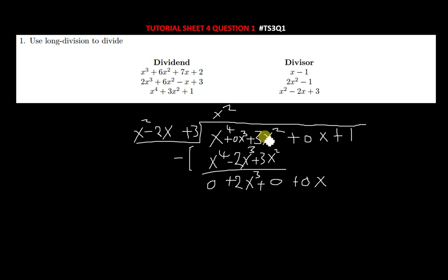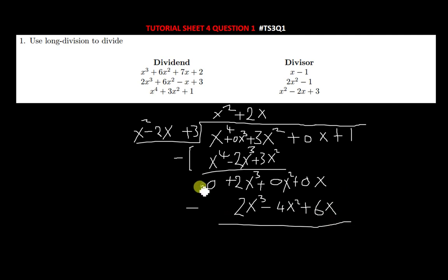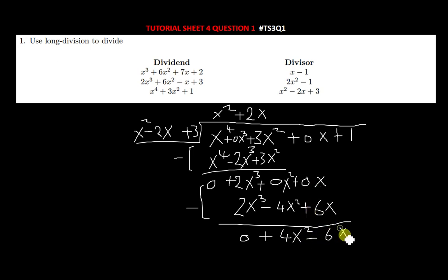Now divide x² into 2x³ to get positive 2x. Multiply: 2x times x² gives 2x³; 2x times −2x gives −4x²; 2x times 3 gives +6x. Subtract: 2x³ − 2x³ = 0; 0 − (−4x²) gives +4x²; 0x − 6x gives −6x. Bring down the +1.